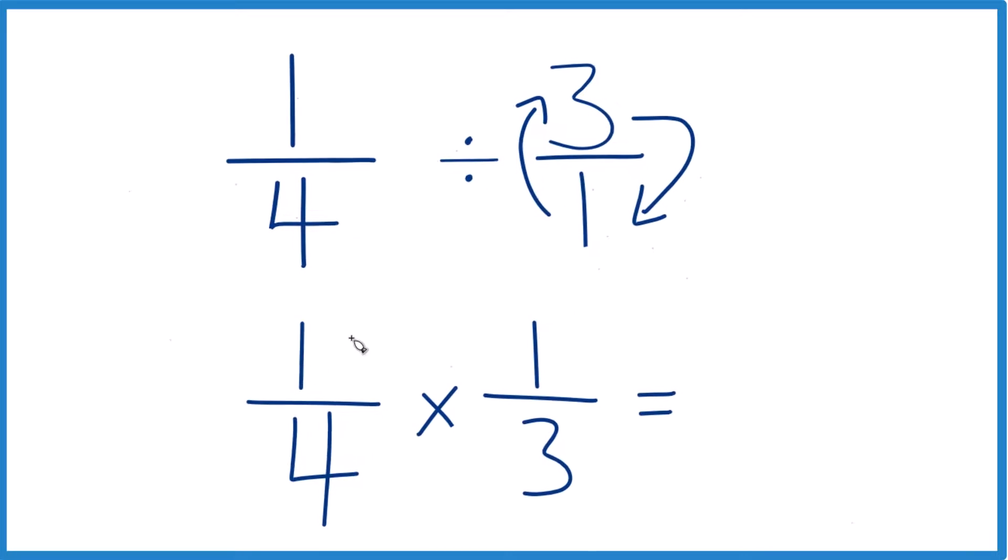And with fractions, when we multiply, we multiply the numerators. One times one is one, and four times three, that's 12. So one-fourth divided by one-third, or one-fourth times one-third, that gives us one-twelfth. And that makes sense. We said it was going to be a pretty small number, and it is.